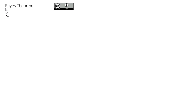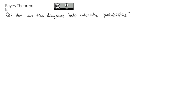We're going to take a look in this video, continuing our investigation into probability, at the question: how can tree diagrams help calculate probabilities? First, before we get into it, we're going to introduce the idea of the tree diagram, which is a diagram that has a branch for every decision.